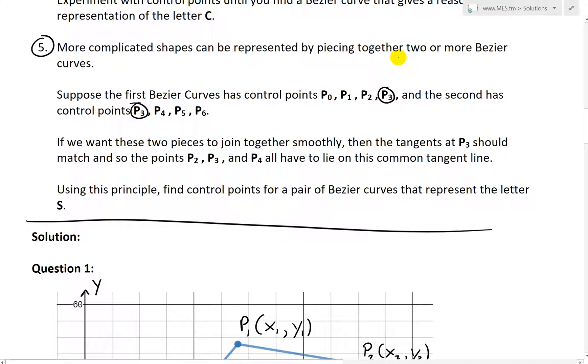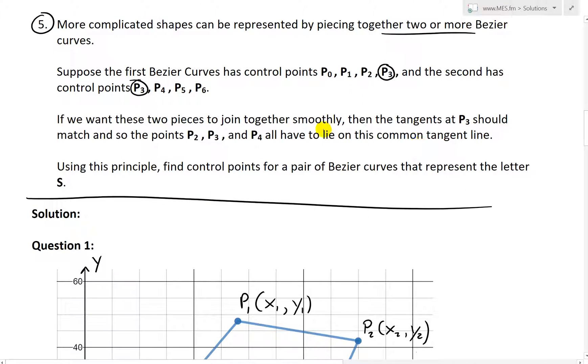So we can connect multiple ones by having one of the control points on both sides, and if we want these two pieces to join together smoothly, then the tangents at these points on cross both curves should match. And so the points P2, P3, and P4 all lie on this common tangent line.